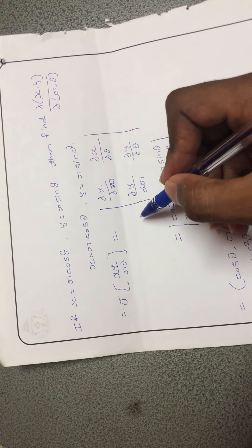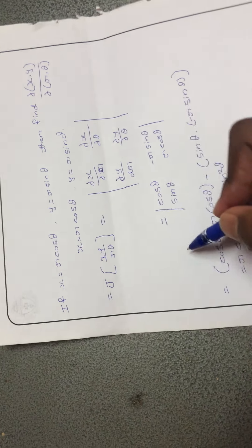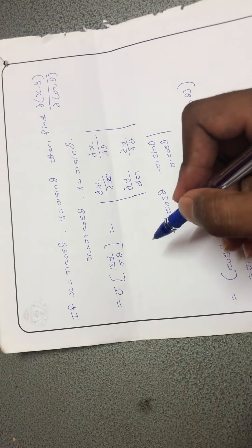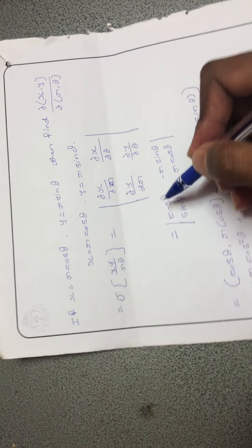Here we have x is equal to r cos theta and y is equal to r sin theta. Then evaluate dy by r theta equal to...